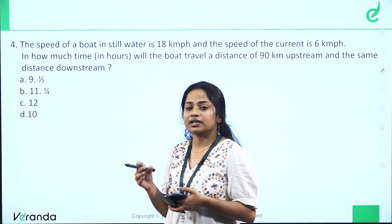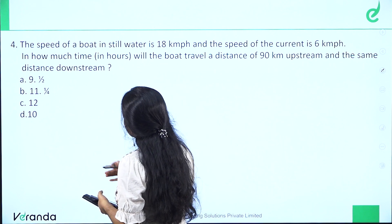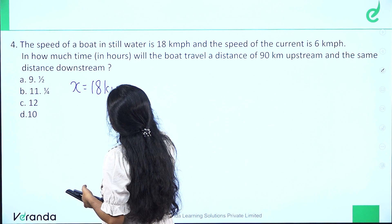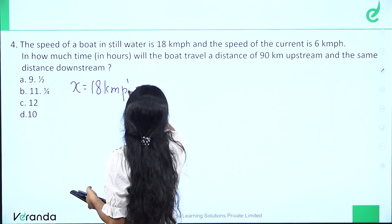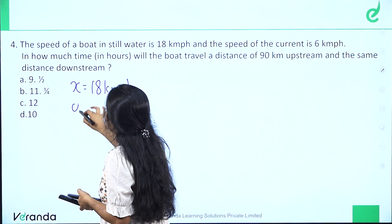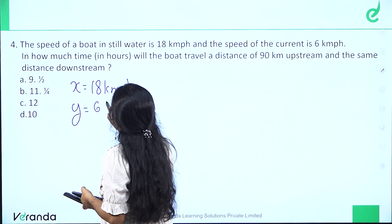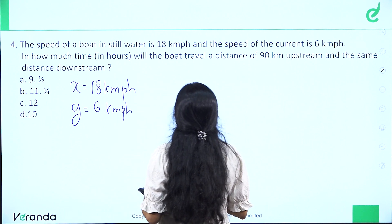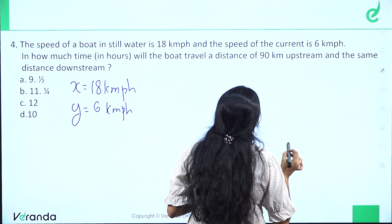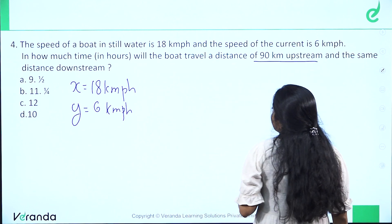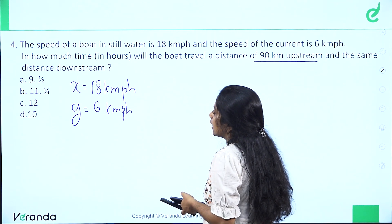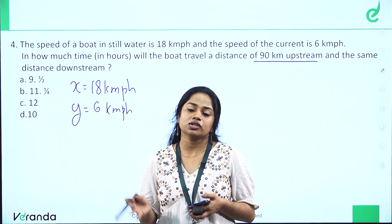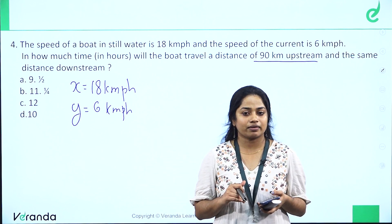The speed of the boat in still water is 18 km per hour, so x equals 18 km per hour, and the speed of the current is 6 km per hour, so y equals 6 km per hour. In how many hours will the boat travel a distance of 90 km upstream and the same distance of 90 km downstream?